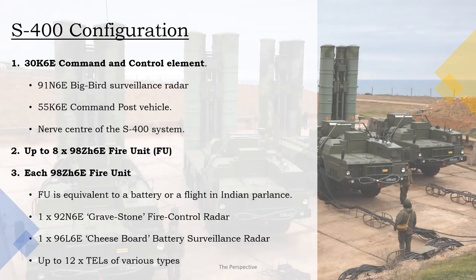The S-400 system comprises a 30K6E command and control element and up to eight 98ZH6E fire units. The 30K6E command and control system consists of the 91N6E Big Bird surveillance radar and the 55K6E command post. A fire unit broadly corresponds to a battery or a flight in Indian parlance. A single fire unit comprises a 92N6E Gravestone fire control radar, a 96L6E Cheese Board surveillance radar, and up to 12 TELs of various types.